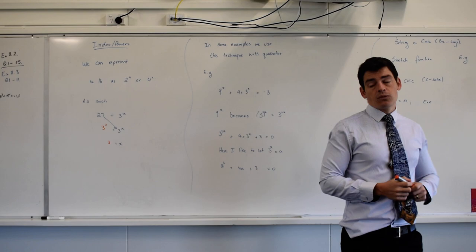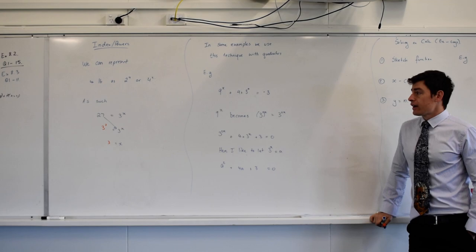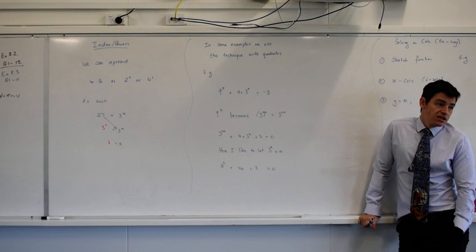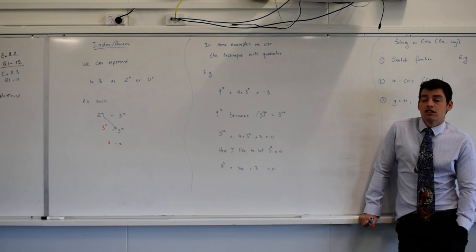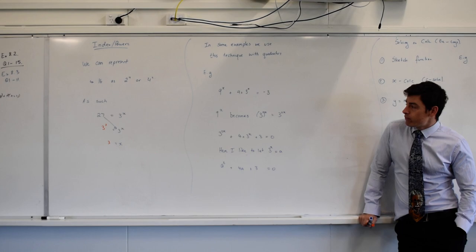The most complex these questions will come on tests is something like this, where we've got 9^x plus 4 times 3 to the power of x is equal to negative 3. We can probably see it looks a little bit like what? It starts with q and it's a quadratic. Quadratic is your good job.